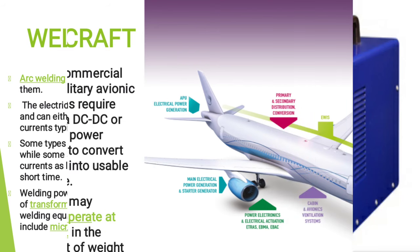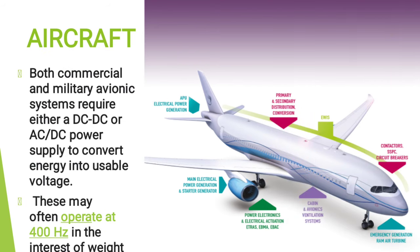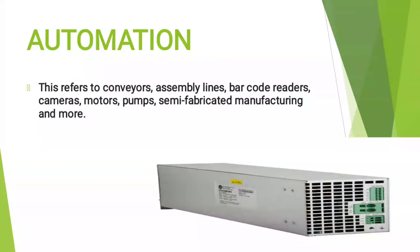Both commercial and military avionic systems require either a DC-to-DC or AC-DC power supply to convert energy into usable voltage. In automation, power supplies are used for conveyors, assembly lines, barcode readers, cameras, motors, pumps, semi-automated manufacturing, and more.